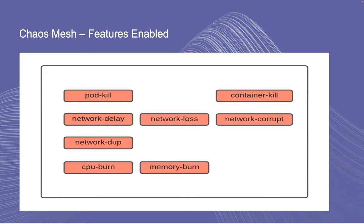Till now, three main verticals have been enabled for our clients: pod chaos, network chaos, and stress chaos. We are controlling all of this through our web functionality of Kubernetes.